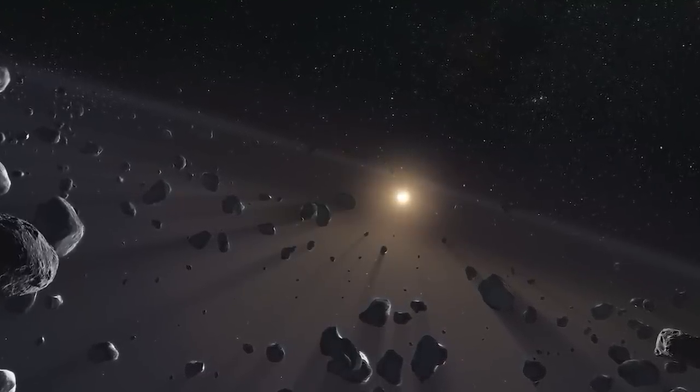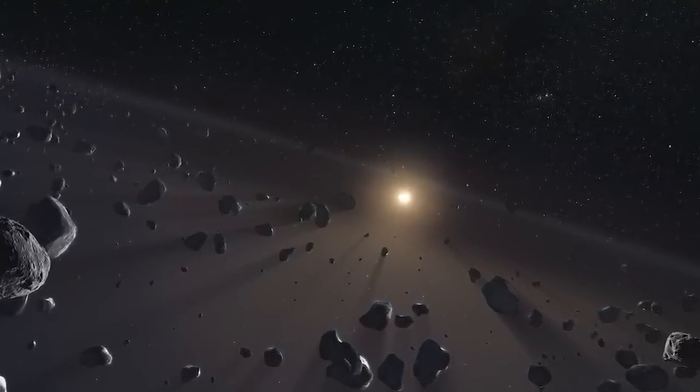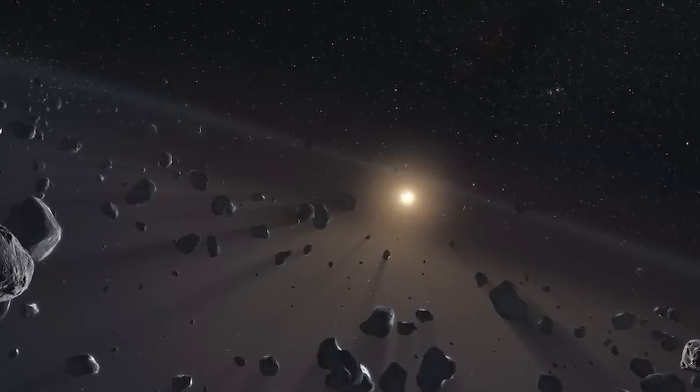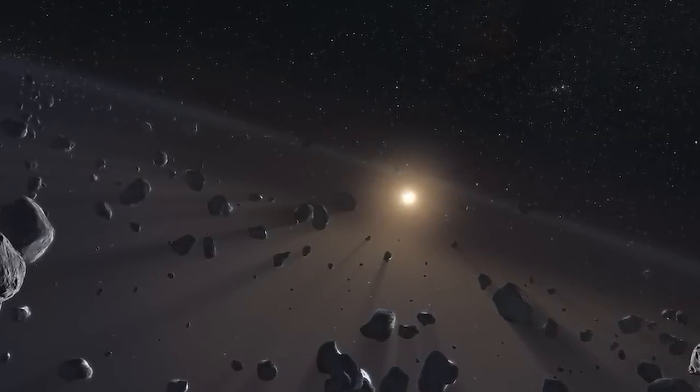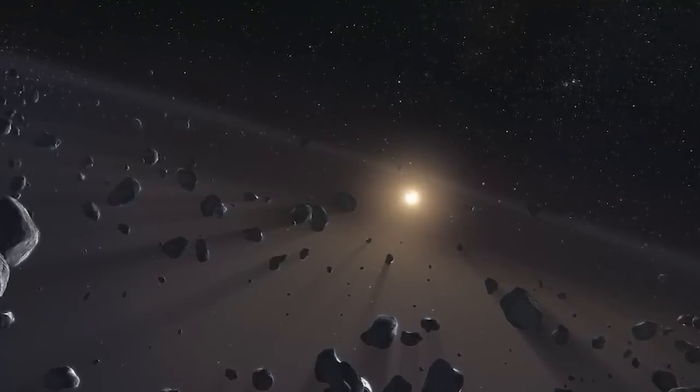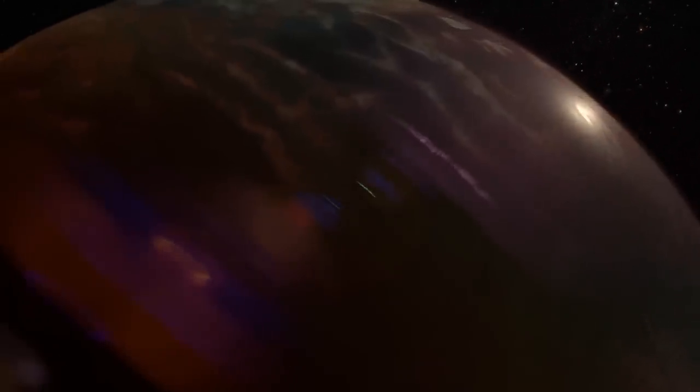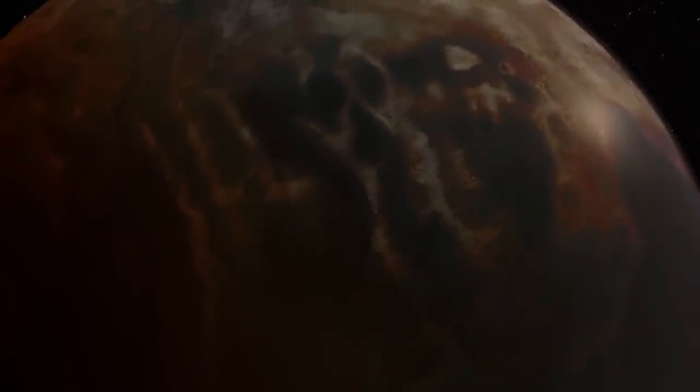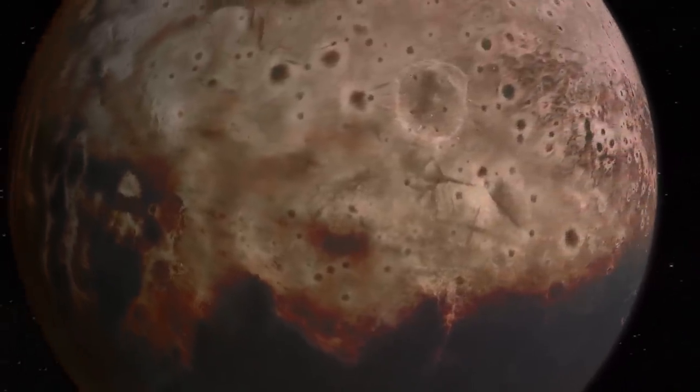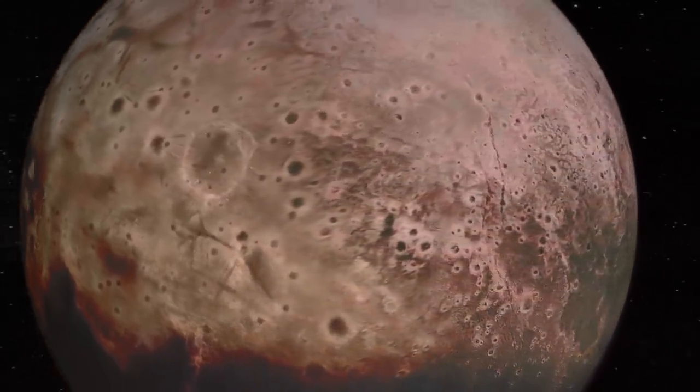However, a recent study suggests that the scientific community made a mistake in removing Pluto from the list of planets in the solar system in 2006, relegating it to the rank of Plutoid. Pluto is the ninth largest object orbiting the Sun, with an equatorial diameter of 2,376 kilometers, almost 1400 miles.